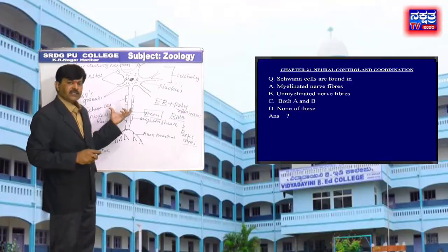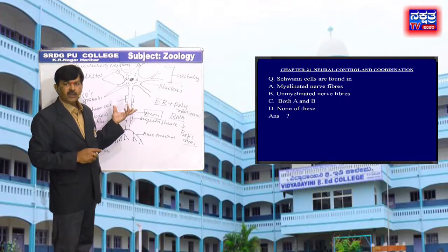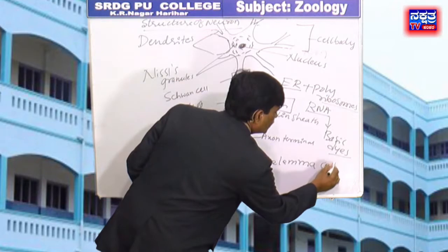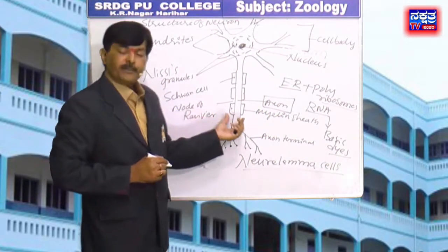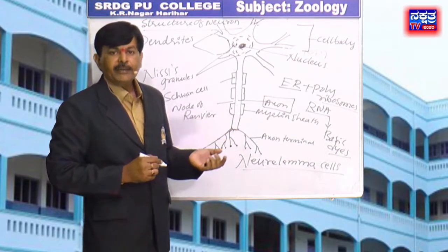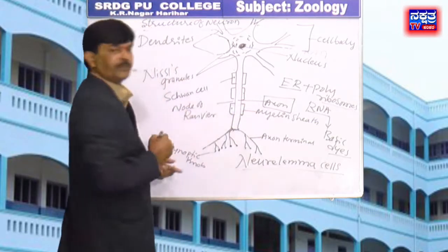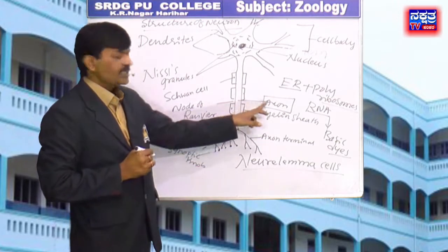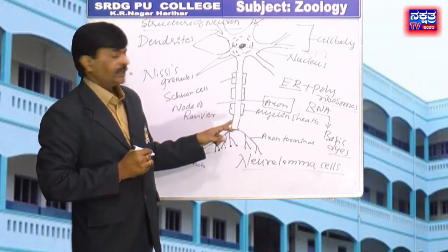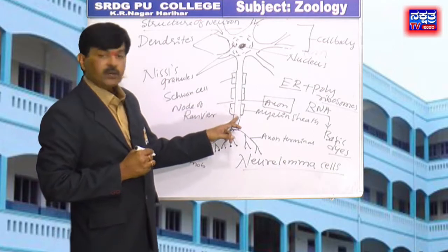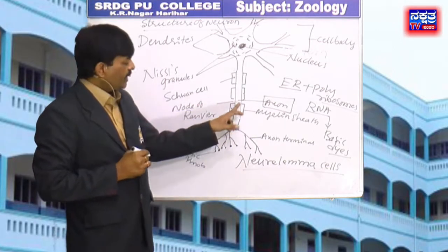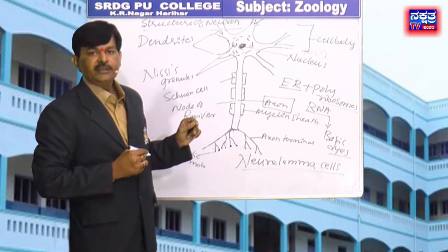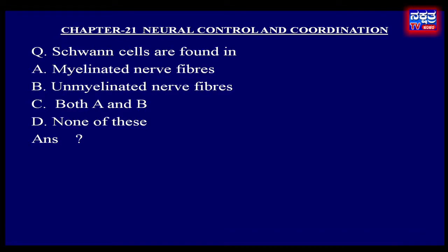Schwann cells, also called neurolema cells, are present in the peripheral nervous system. In myelinated nerve fibers, this cell produces the myelin sheath around the neural axon. But in unmyelinated nerve fibers, these cells do not form a myelin sheath around the axon. The name was given by German physiologist Theodor Schwann. Therefore, in the given options, C — both A and B — is the right answer.